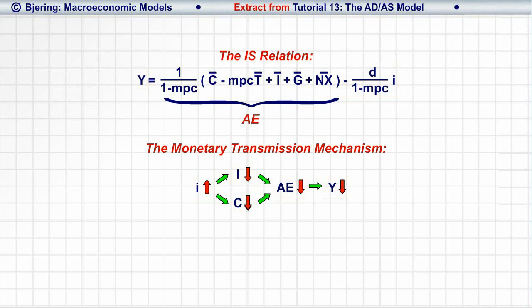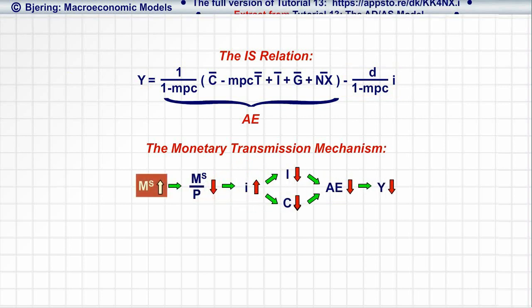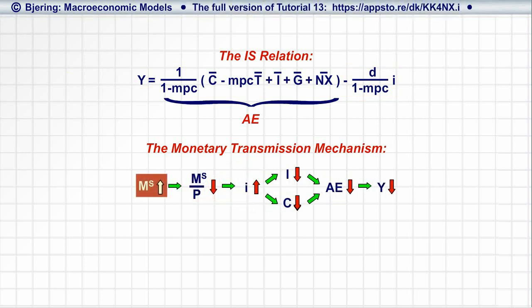Recall from Tutorial 11 that the central bank can set the interest rate directly—that is, the interest rate is exogenous, I bar—or indirectly, by way of a change in the nominal money supply. That is, the money supply is exogenous, M bar.